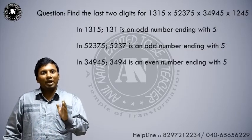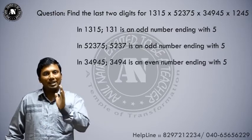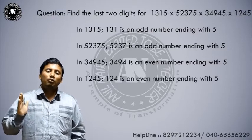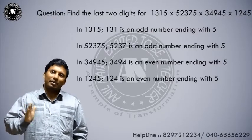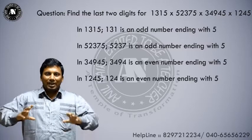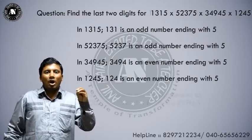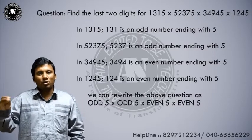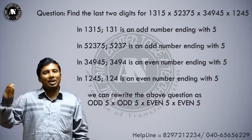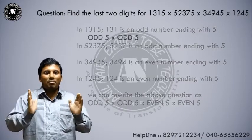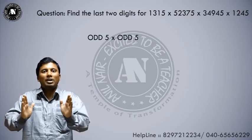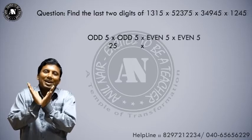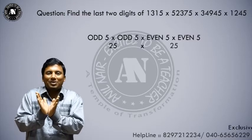Third term: 34945 — 3494 is an even number, so it is an even number ending with 5. Fourth term: 1245 — 124 is an even number ending with 5. So the entire question can be rewritten as: odd number ending with 5, into odd number ending with 5, into even number ending with 5, into even number ending with 5. Odd 5 into odd 5 gives last two digits 25. Even 5 into even 5 gives last two digits 25.